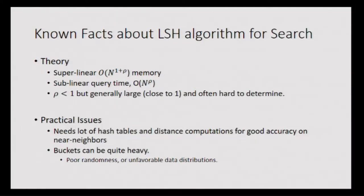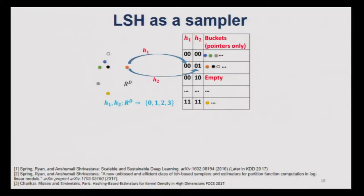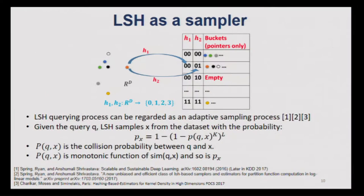Some facts about the LSH algorithm: theory says it's super-linear in memory — memory scales as n^(1+ρ) where ρ is a query-dependent term. Query time is sub-linear, but ρ is often large and can be close to 1, and it's often hard to determine; it's very query specific. From a practical aspect, you need to worry about having many hash tables, and buckets can get quite heavy due to poor randomness and unfavorable data distributions. But there is another view of LSH — the sampling view — which just came into light very recently.